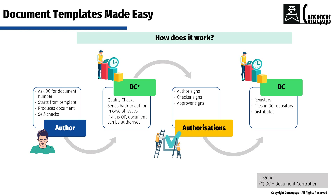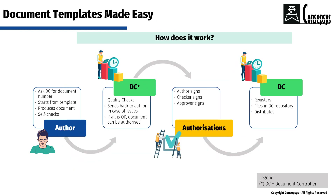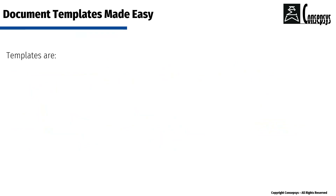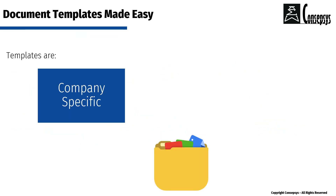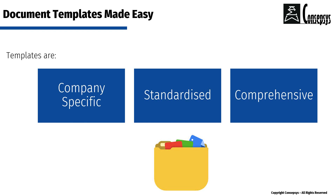Just a quick note: if you think this video brings you value, please hit the like button and consider subscribing to this channel for more tips on document control. Templates are company specific — every company decides the look and feel as well as the information displayed. They are standardized: all authors must start from the same template when creating a document. They are comprehensive: they include all minimum fields and placeholders needed to identify, control, and track the document.